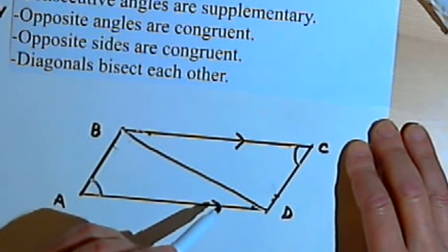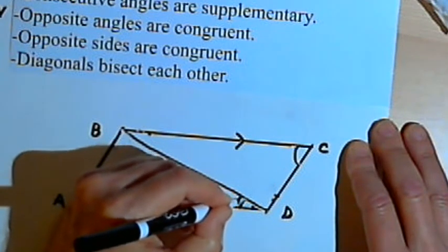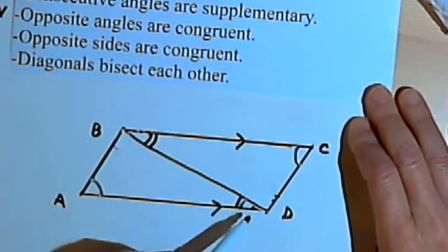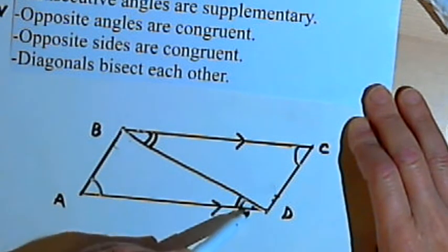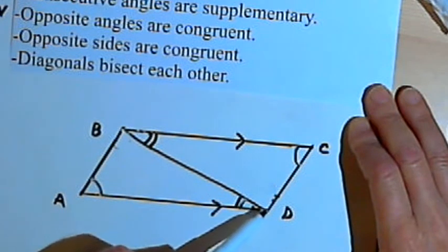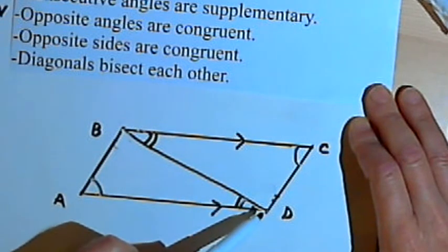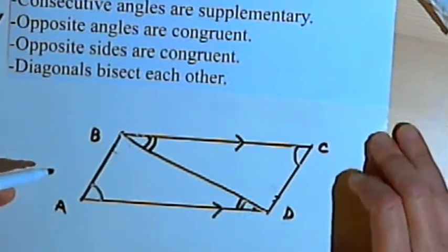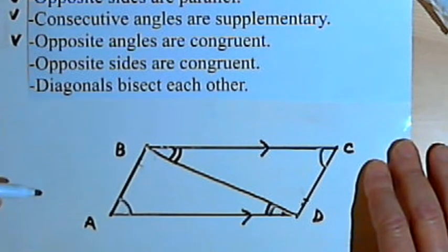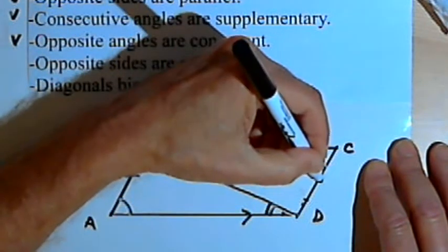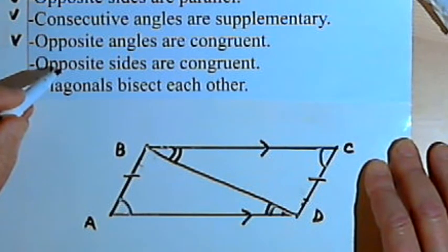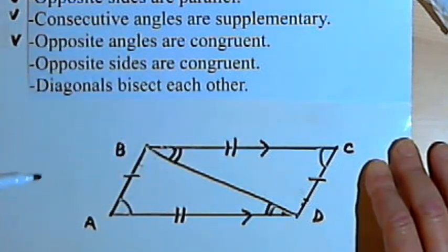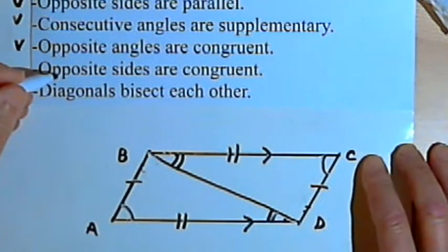The diagonal BD is a transversal — it cuts across two parallel lines, so the alternate interior angles of that transversal are going to be congruent. I've got two sets of angles that are congruent, and I've got a side that both triangles share: side BD. So I've got congruency by angle-angle-side. If those two triangles are congruent, their corresponding sides must be congruent — meaning side AB is congruent with side CD, and side AD is congruent with side BC. Those are opposite sides, so the opposite sides are congruent.